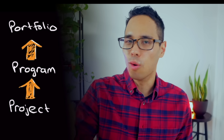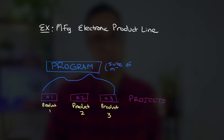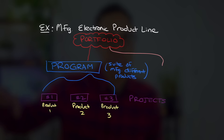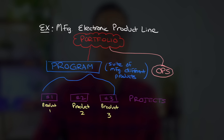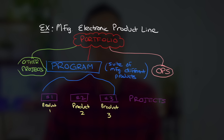To visualize these differences, let's use the example of manufacturing a product line of electronic tools. Each product would be its own project. The entire lineup of tools would constitute an overarching program — a program for the suite of electronic tools. The portfolio would consist of this program plus other projects, programs, and the operations needed to manufacture those product lines.